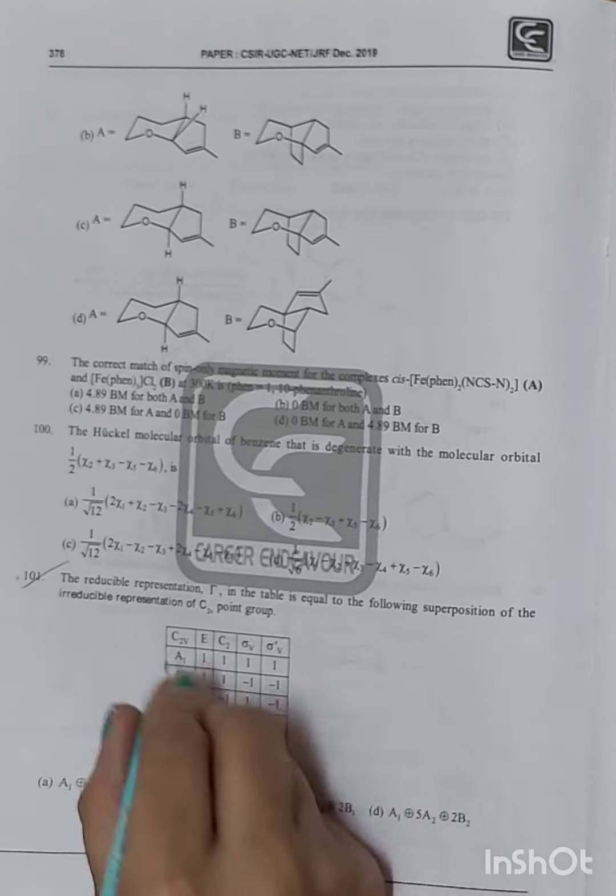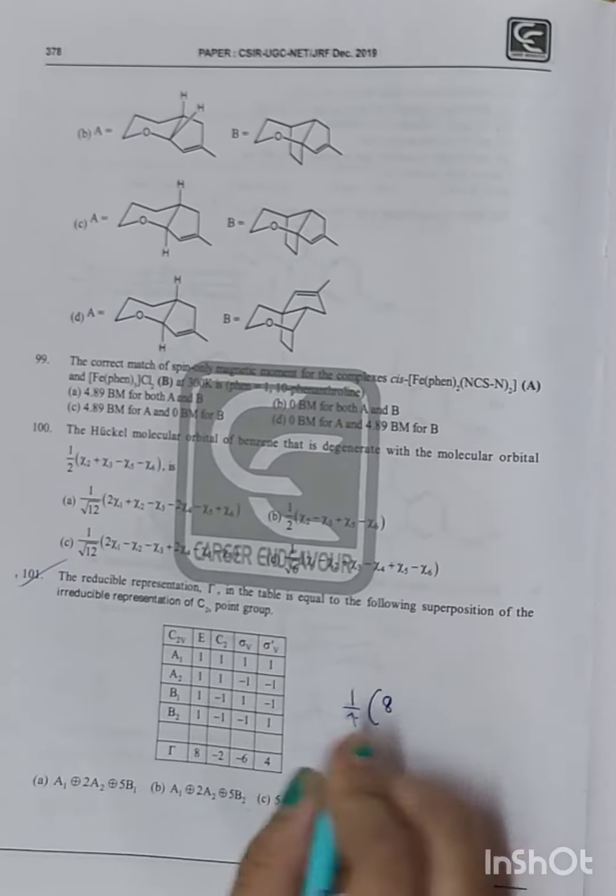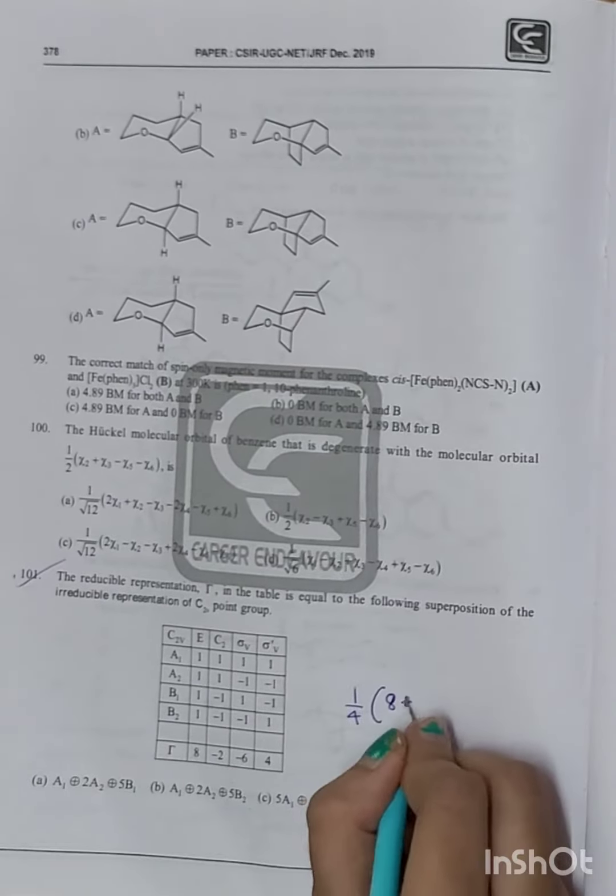So if you start with B1 or B2, you will see which order. What is this? 2B equals 1 upon 4. 1 into 1 into 8. 1 into minus 1 into minus 2 plus 2.